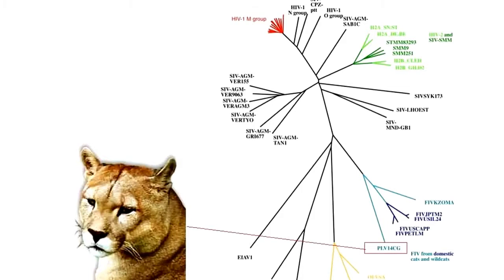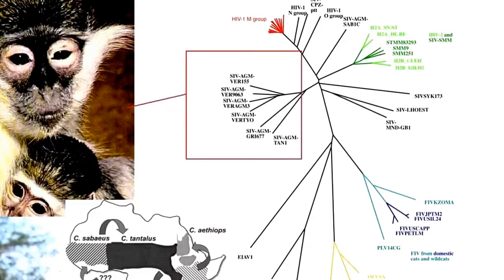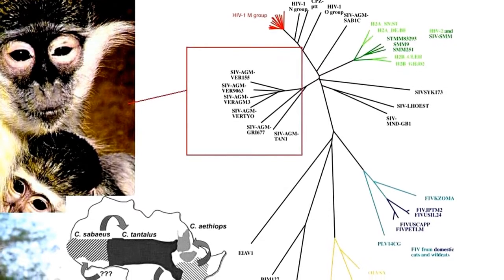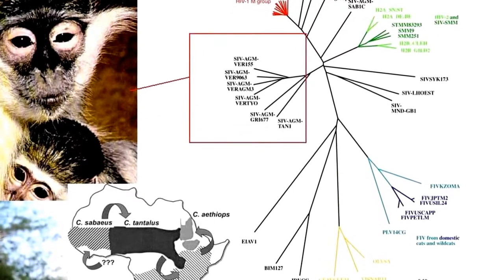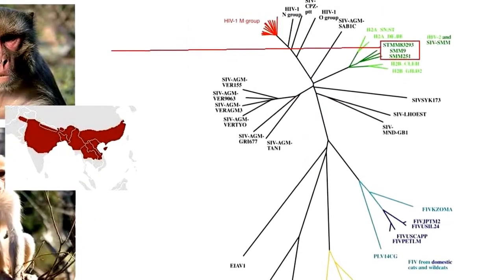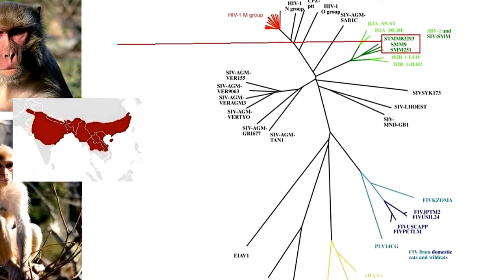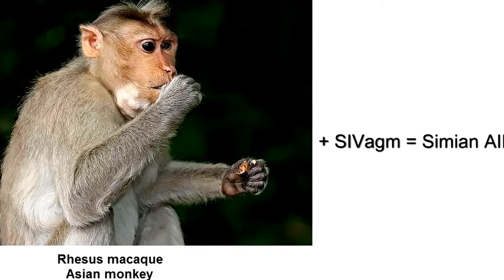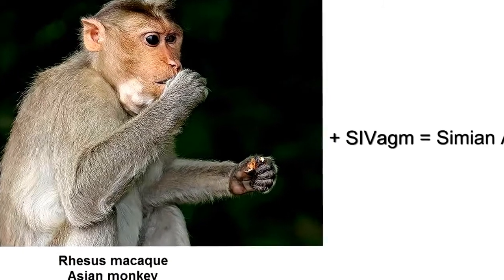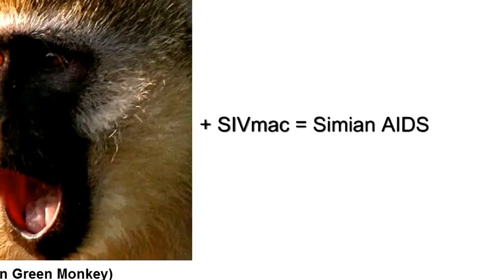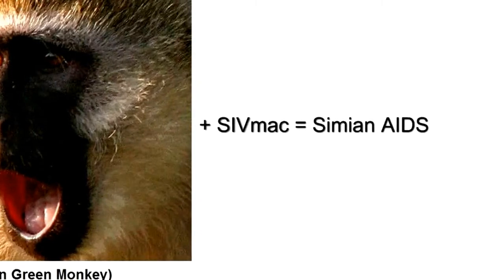There's even a puma lentivirus. Not all of them cause disease under certain conditions. For example, the simian immunodeficiency virus strain that infects African green monkeys doesn't usually cause much disease to its host. The rhesus macaque also has a strain of SIV that causes little or no disease. However, if you take a rhesus macaque, a monkey from Asia, and infect it with the SIV from the African monkey, or vice versa, the result is called simian AIDS, and it parallels what we see in humans.